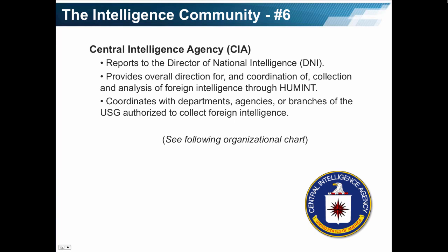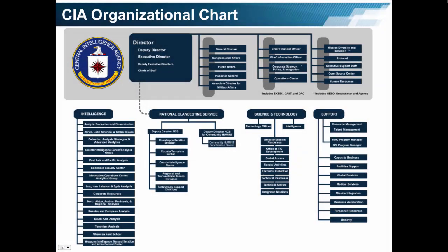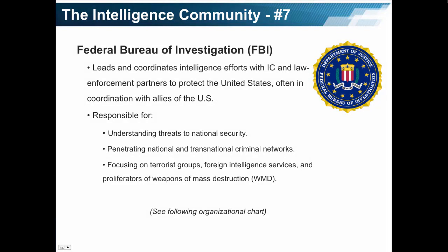The Central Intelligence Agency reports to the Director of National Intelligence. This is critical because prior to the creation of the DNI, the Central Intelligence Agency and the Director of the Central Intelligence Agency were the principal leaders in the U.S. intelligence community and reported directly to the President. Today, they report to the Director of National Intelligence. The CIA provides overall direction for and coordination of collection and analysis of foreign intelligence through HUMINT, and coordinates with departments, agencies, and branches of the U.S. government authorized to collect foreign intelligence. Here is the organizational chart of the CIA.